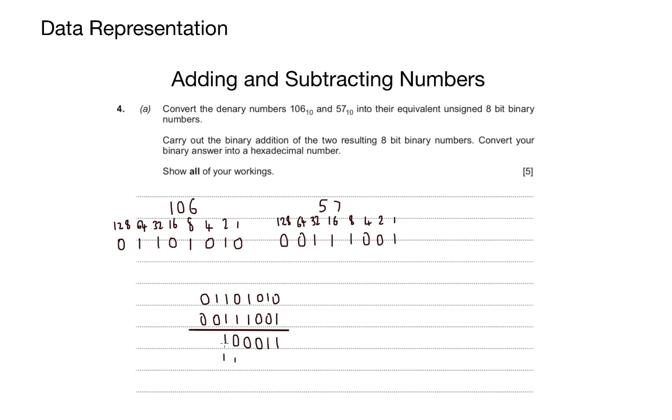And 1, 0 and carry 1 will give me 0, carry a 1. 0, 0 and 1 will simply give me 1. And that gives me the final binary addition total of 10100011.